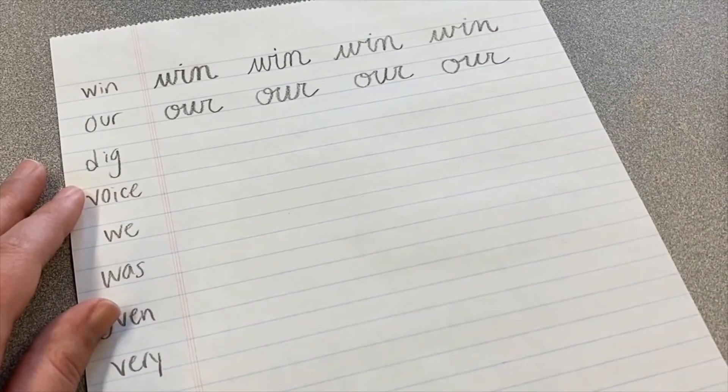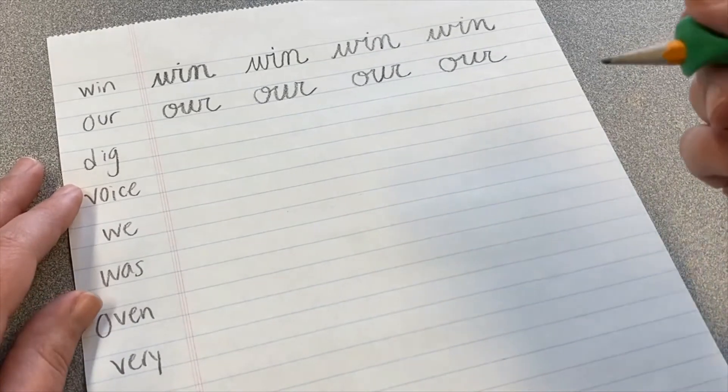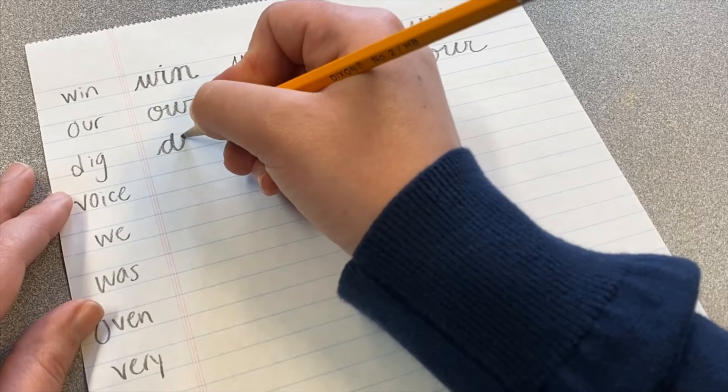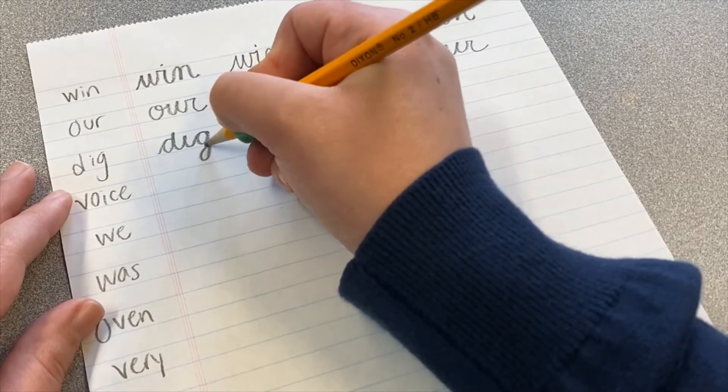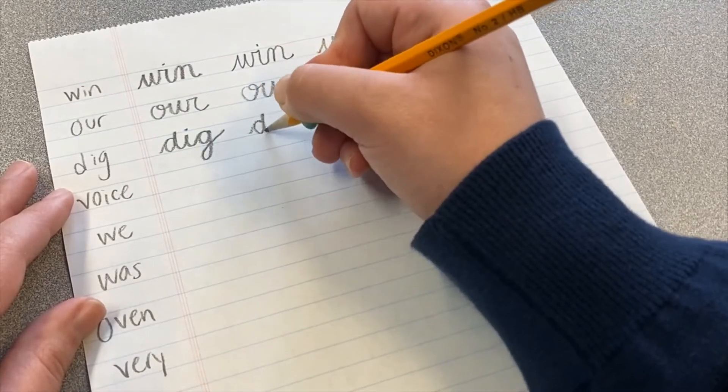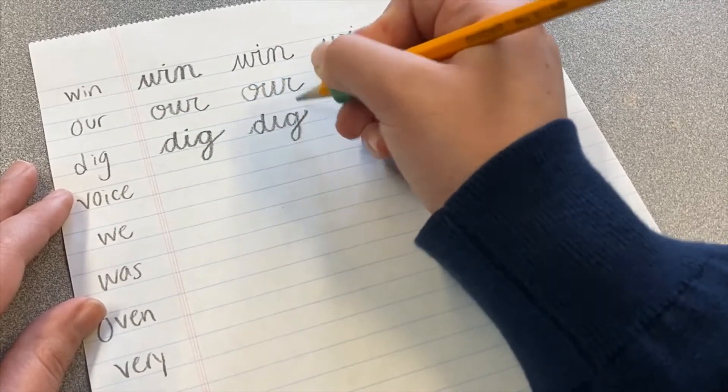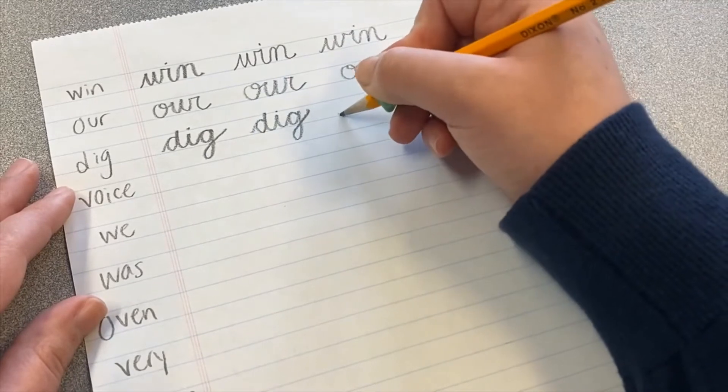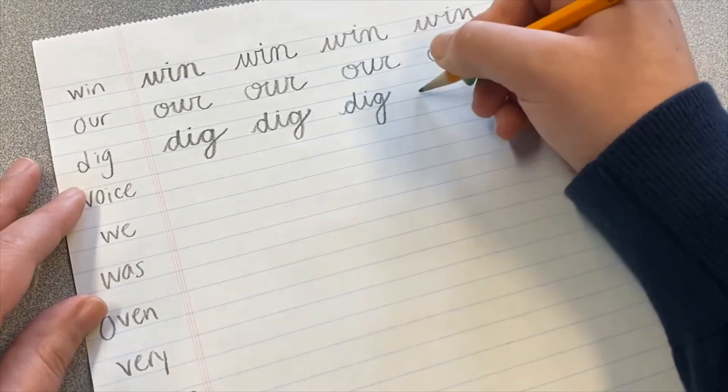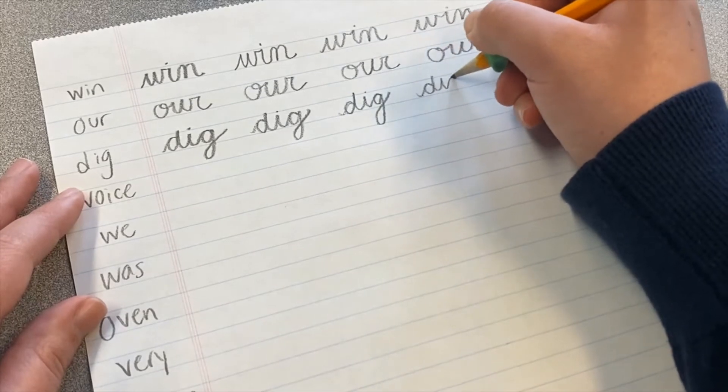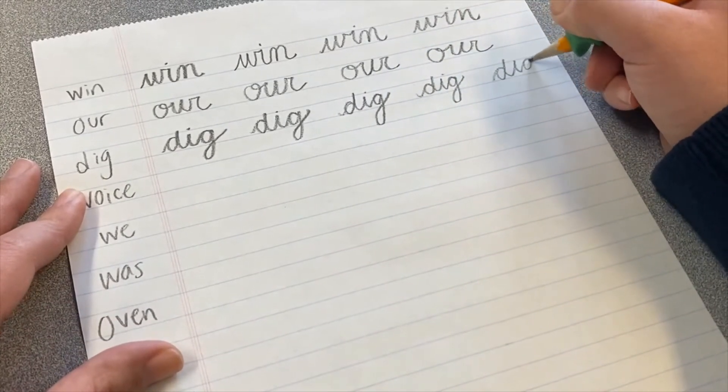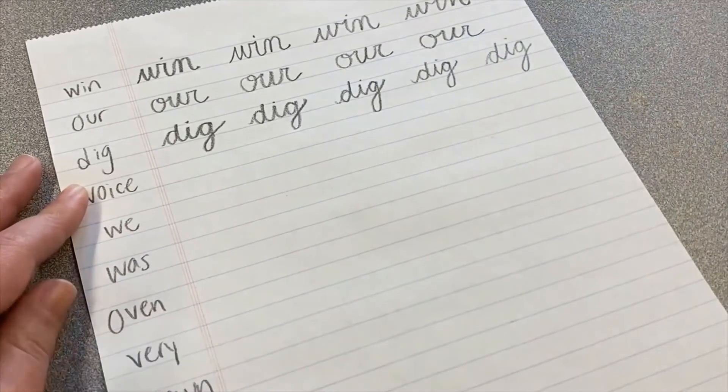Next up is the word dig, D-I-G. So we'll make our D, I, and then I'll make our G with that loop, and then we'll dot it. D, I, G, and a dot.